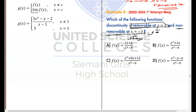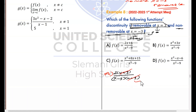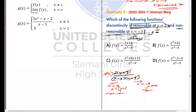Option A: 2(x plus 3) divided by (x squared minus 9), which factors as (x minus 3)(x plus 3). The x plus 3s cancel each other, so x equals negative 3 goes — it's removable. But x equals 3 stays — that's non-removable. I need 3 to go, not negative 3. This is the opposite of what's required. So option A is false.